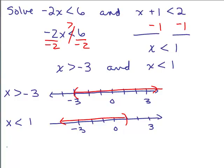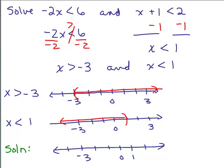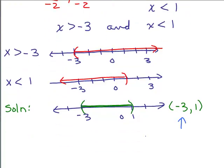So the solution on a graph would be: if here's negative 3 and here's 1, the solution is right in between negative 3 and 1. And how do I write my solution using interval notation? It's in between negative 3 and 1, so the solution in interval notation is parenthesis negative 3 comma 1 parenthesis.